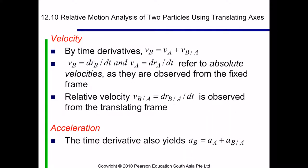Using the same convention, when we want to calculate the velocity, we differentiate the position divided by time. So in this case, by time derivative, we have VB equals VA plus VB relative to A. The relative velocity is observed from the translating frame.